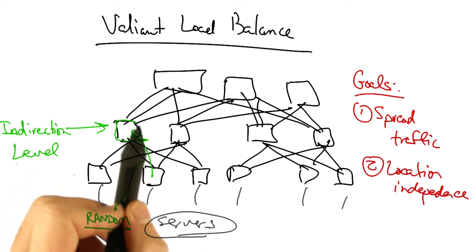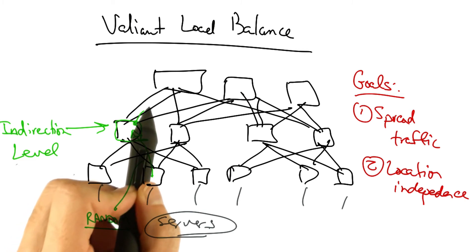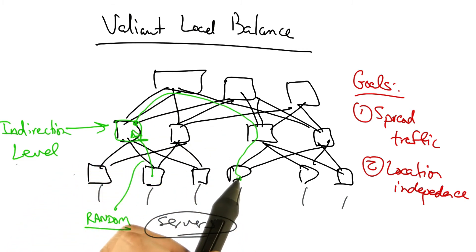This intermediate switch then forwards the traffic to the ultimate destination, depending on the destination MAC address of the traffic. Subsequent flows might pick different indirection points for the traffic at random.